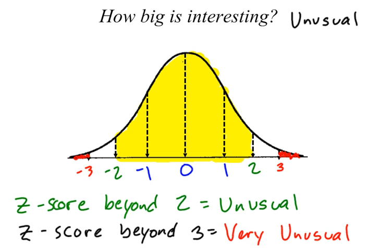So if you get out beyond two standard deviations out in this area or that out in this area with your Z-scores, then you are considered unusual. And if you get out beyond three standard deviations, then that data value is considered very unusual.